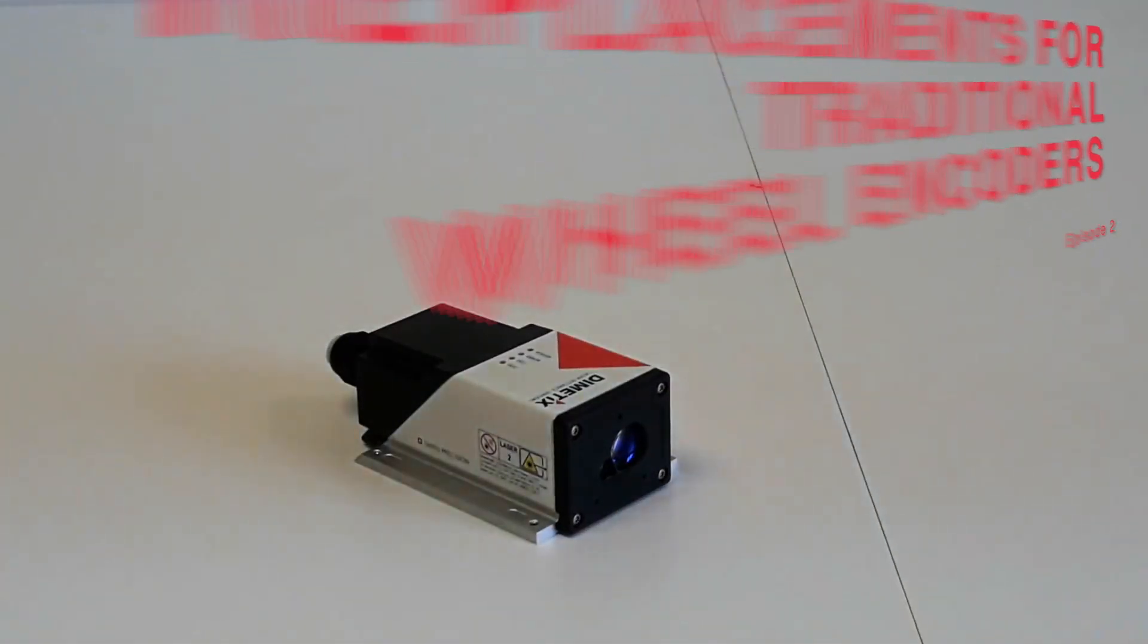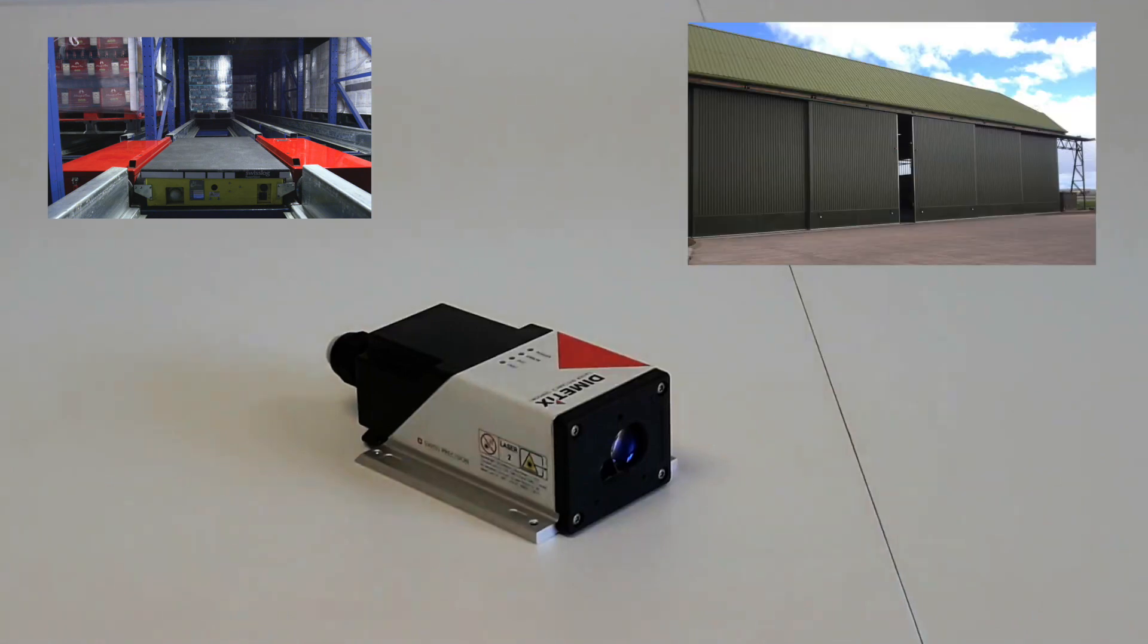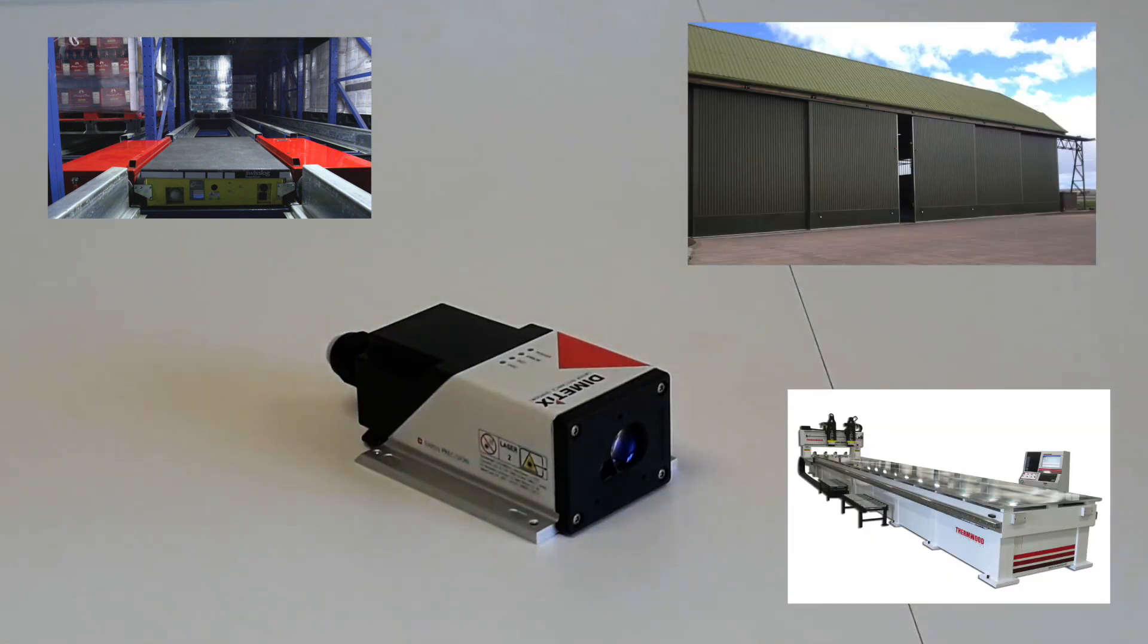Moving equipment such as transfer carts, large bay doors, sliding machine beds, and conveyors oftentimes use wheel encoders to digitize motion and position.